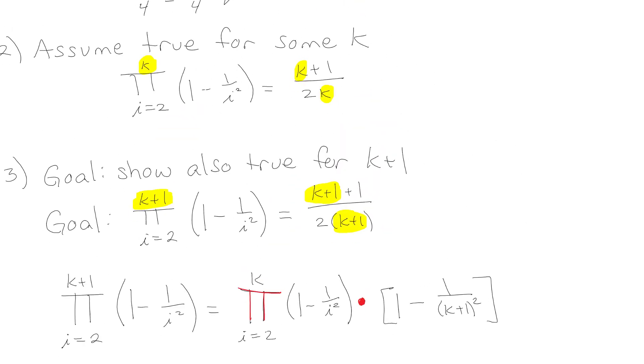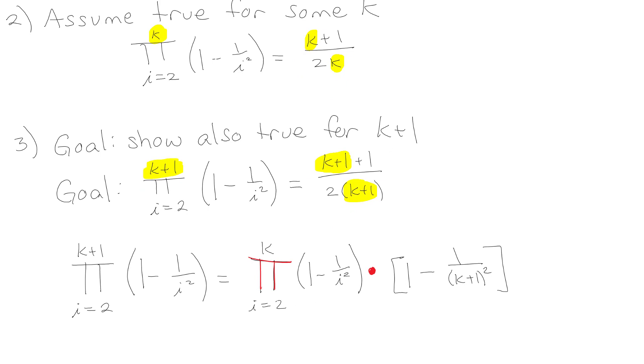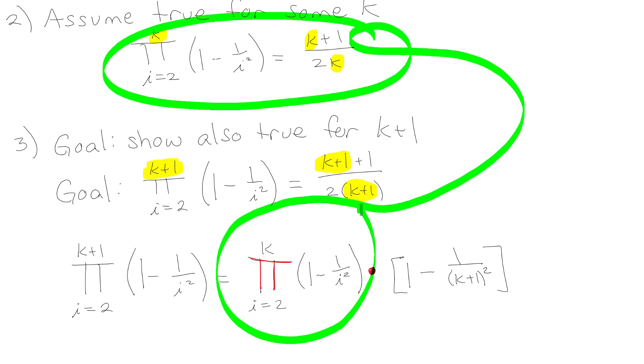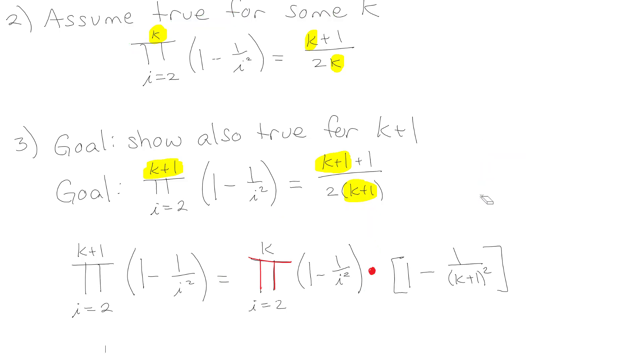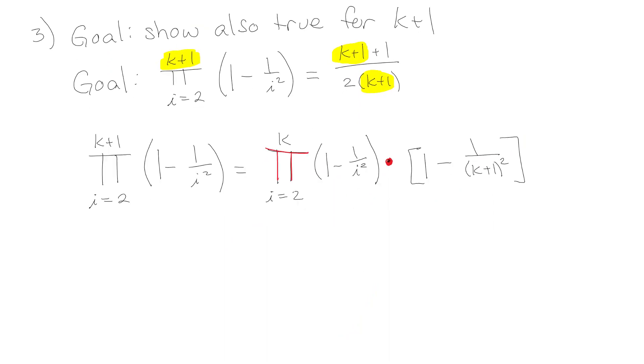Now remember I have this assumption up here. This assumption here matches up perfectly with what I have here. So I just need to put in that substitution. I've got that equals (k plus 1) over 2k times (1 minus 1 over (k plus 1) squared).